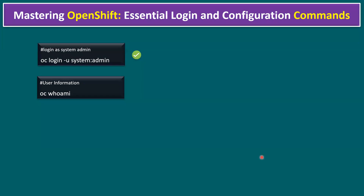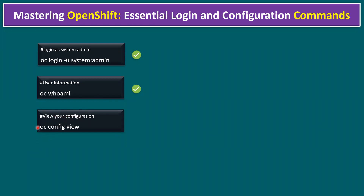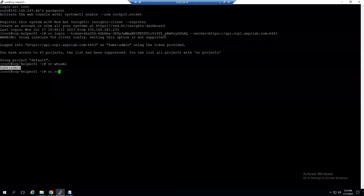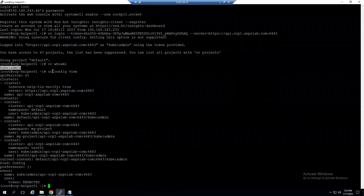Next command: to view our OpenShift cluster configuration, the command is `oc config view`. Let me type that — it gives us cluster configuration information including cluster details and all related settings.